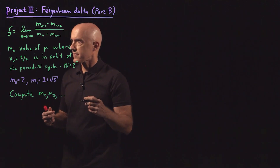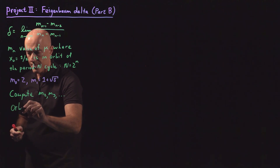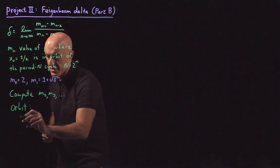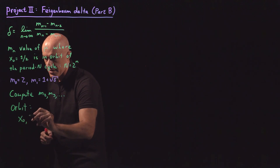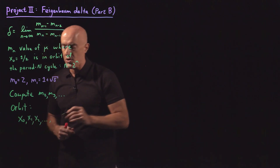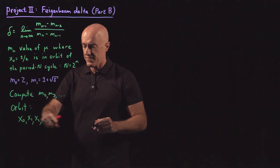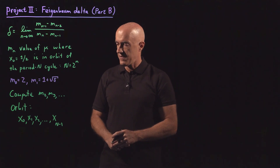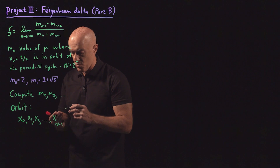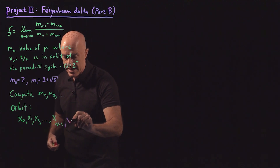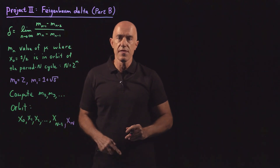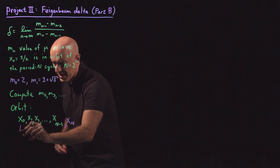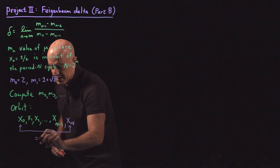Let's start by talking about the orbit. The orbit of the logistic map, when it's periodic, is going to be these values x0, the starting value that's in the orbit, x1, x2, all the way for a period capital N cycle. We have N of these values, so this will get to x sub N minus 1. Then we get one more value, x sub N, which will agree with x sub naught — so it's periodic, we get back to x sub naught. And both x sub naught values here are going to be equal to one half when mu is at one of these values of m.